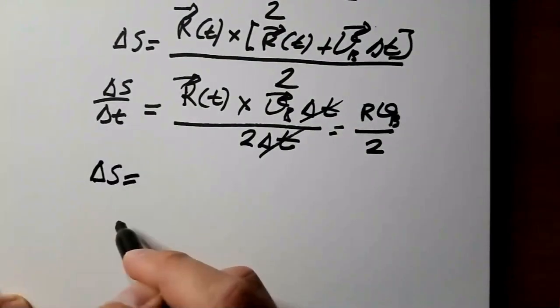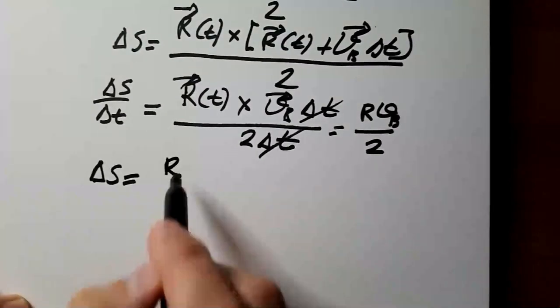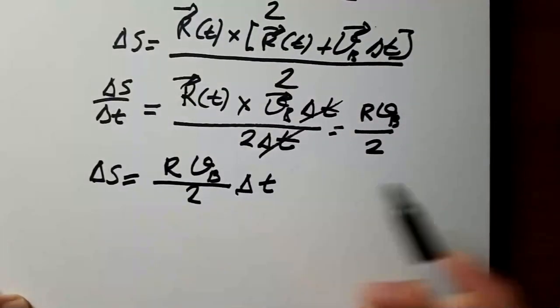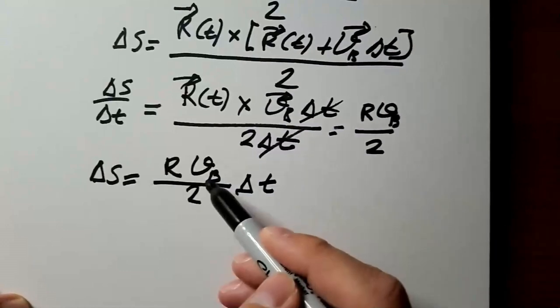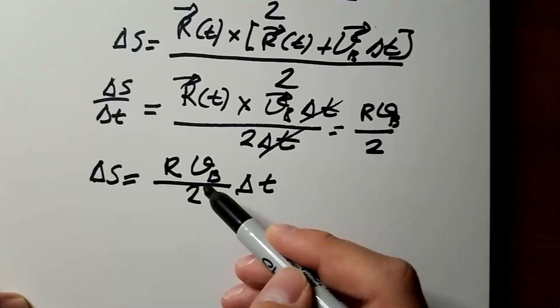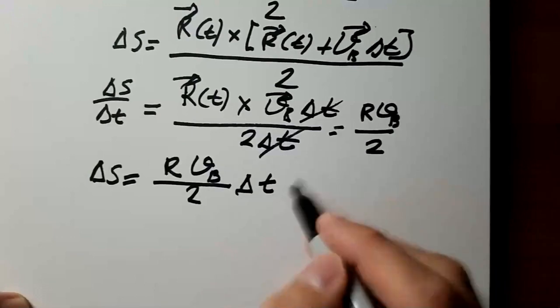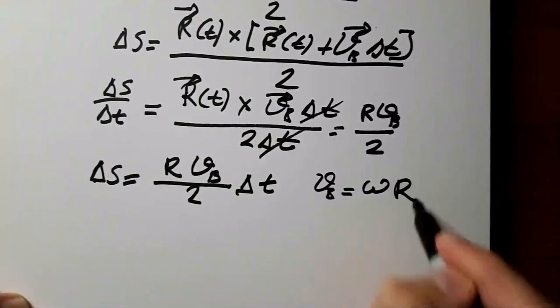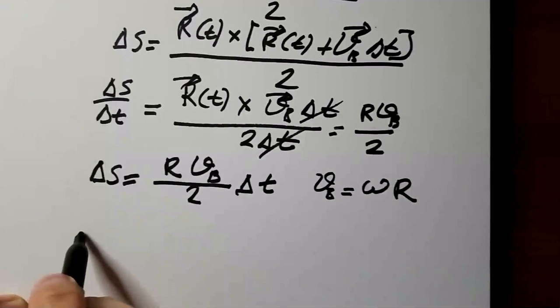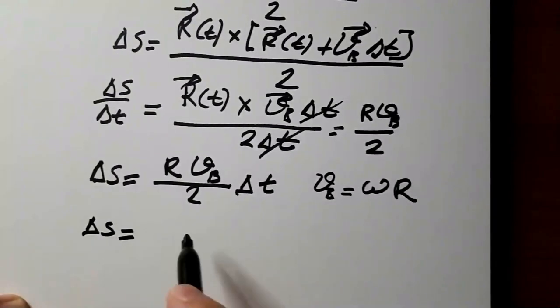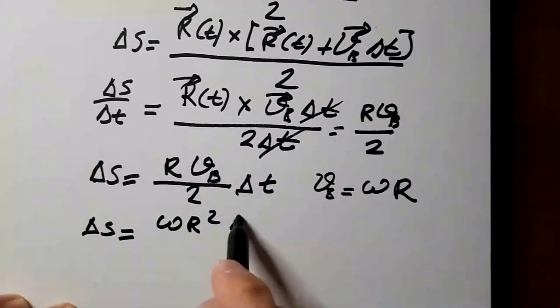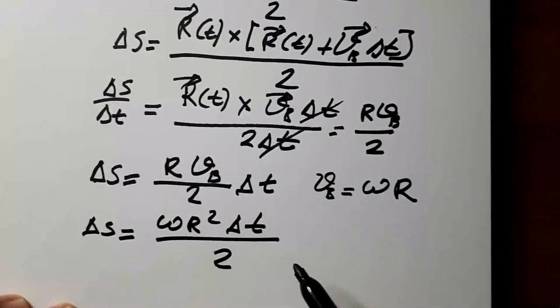So, delta s is equal r vb over 2 times delta t. Vb is the velocity of the blade. And that velocity of the blade can be expressed in terms of angular velocity that we know, omega r, and then I get that my delta s is equal, when I put here omega r, I will get omega r squared times delta t divided by 2.